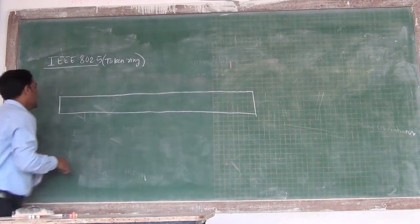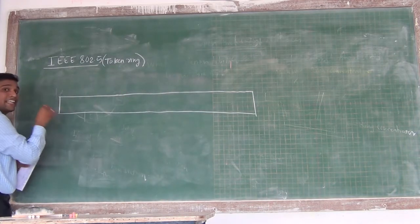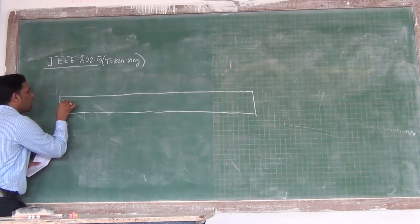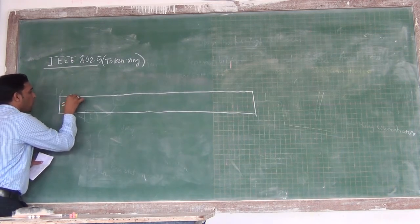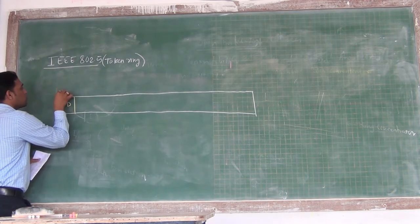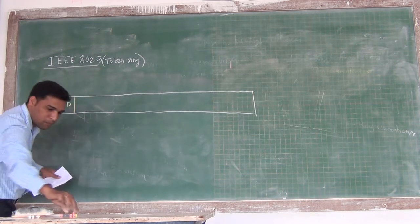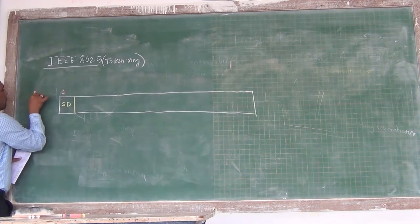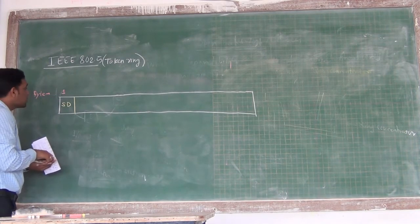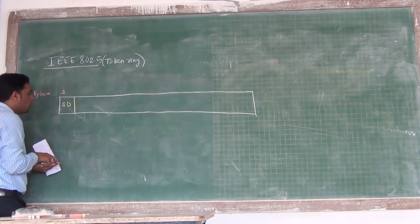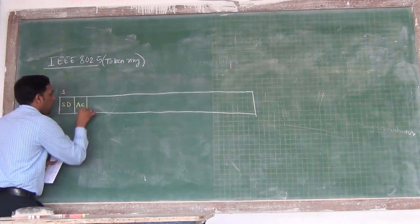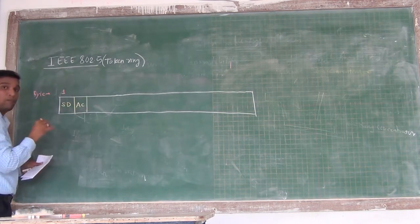The very first field is the starting delimiter. The size of the starting delimiter is one byte. Then it follows the access control.